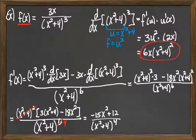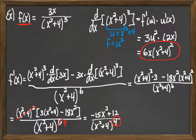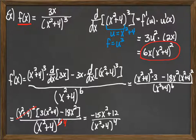One thing you can see to confirm you're on the right track is looking at the exponent you finished with compared to what you started with. We started with a negative third power in the denominator, and an x to the negative third, when differentiated, becomes x to the negative fourth — so the exponent drops. It went from minus three down to minus four, which is what happened here, accounting for the chain rule and the quotient. Hopefully this helps you tackle problems dealing with the chain rule and differentiation.